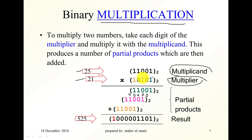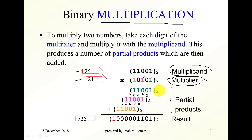Then we take the next digit one, multiply it by the multiplicand, and get that number shifted two positions to the left. The zeros in the multiplier give zero rows. Then we multiply the next one by the multiplicand to get another partial product. These are called the partial products, and we now add them all together.